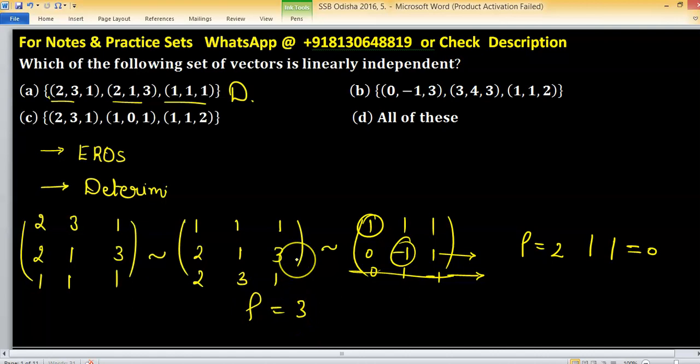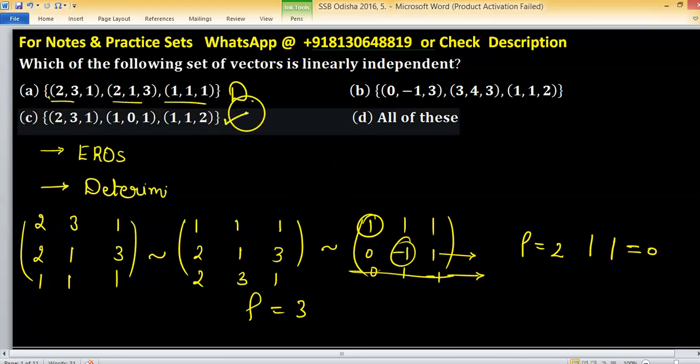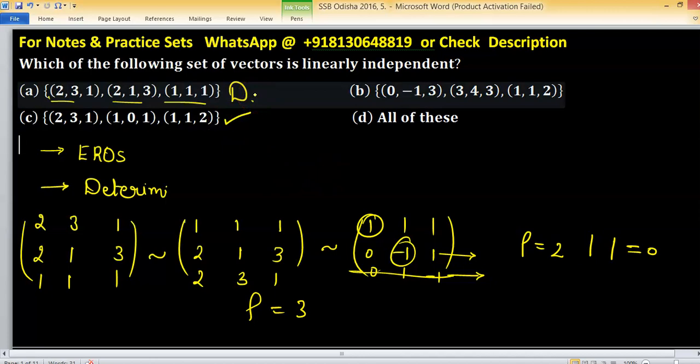Rank is 3, it means you will have 3 pivots. 3 pivots implying that determinant of matrix formation is non-zero. Is non-zero, then linearly independent. So option C is the right one.